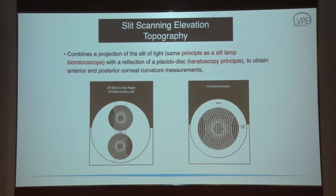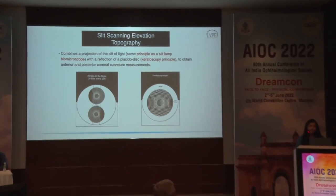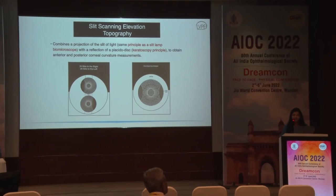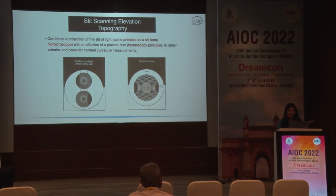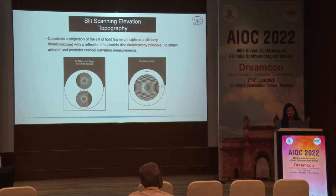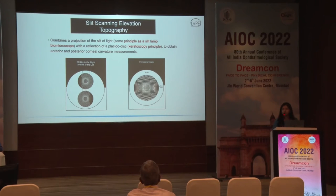Slit scanning elevation topography is used in Orbscan. It combines a projection of slit light — the same principle as a slit lamp — with a reflection of a Placido disc as well. This combination of slit scan and Placido disc gives you the anterior and posterior surfaces of the cornea, which is why it comes under tomography.